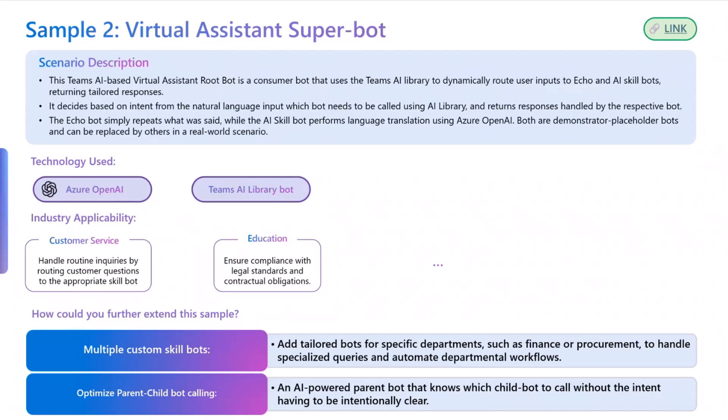Think of these as solution samples. If you extend this further, you can actually have N number of skill-based bots, and you can have one parent bot or super bot to rule them all. I remember the early days of Teams when there was worry about sprawl, and there were some concepts floating around about having a super bot to rule them all. So this is an effort to actually build that out.